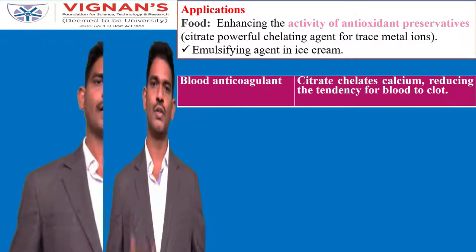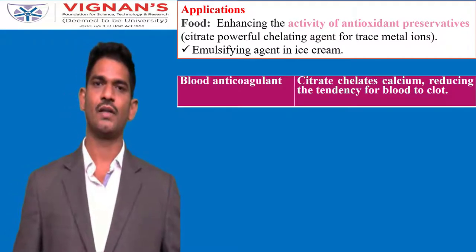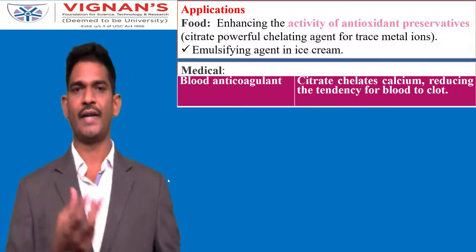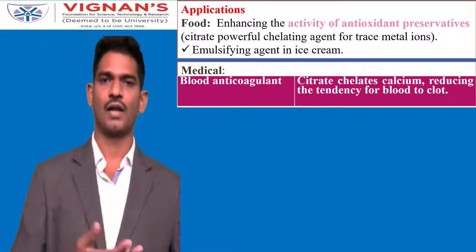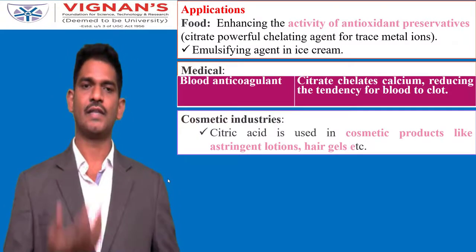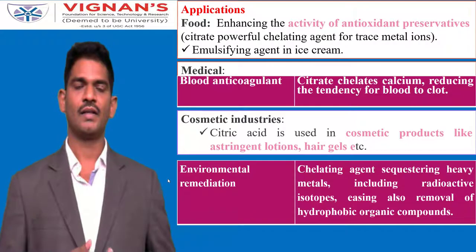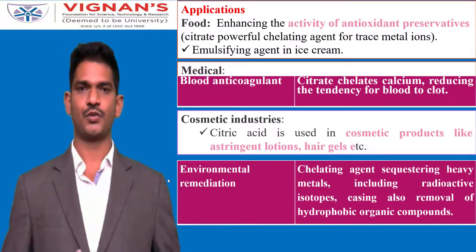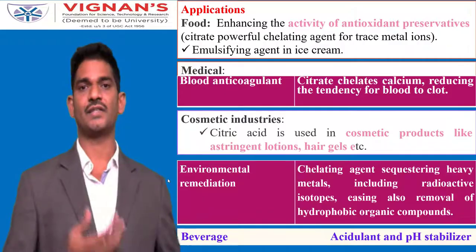Applications of citric acid: it is used preferably in food industries to enhance antioxidant preservative activity and as an emulsifying agent in ice cream. In the medical field, citric acid is used as a blood anticoagulant, as citrate chelates calcium and reduces the tendency for blood to clot. In cosmetics, it is used for making astringent lotions and hair gels. In the environmental field, it is used for removal of metals as a chelating agent, including sequestering heavy metals and radioactive isotopes. In beverages, it acts as an acidulant and pH stabilizer.